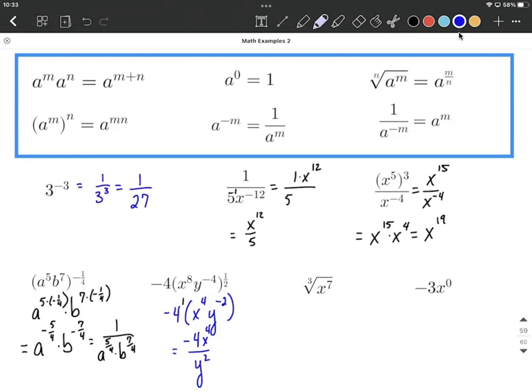So that's our final answer. It's okay that that negative is out in front of the 4. It's not a negative exponent.